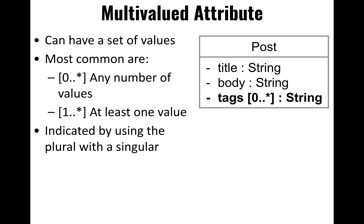Here's an example of a multivalue attribute: tags. This represents multiple strings — presumably an array of tags — which some databases support, allowing array data structures.